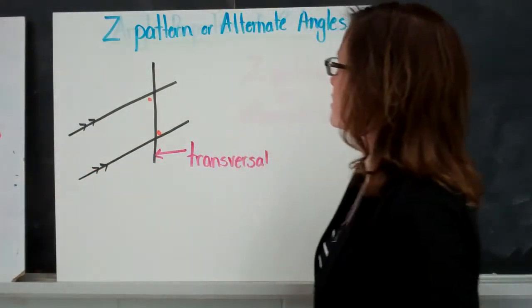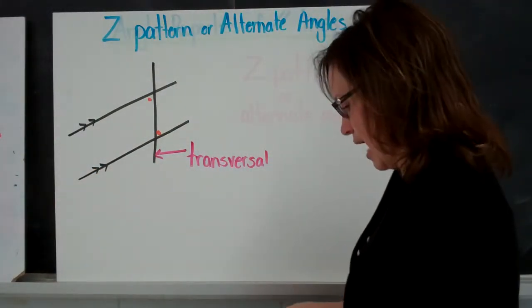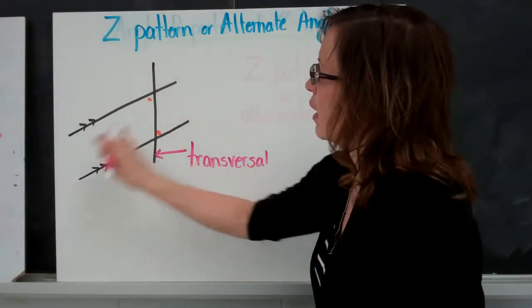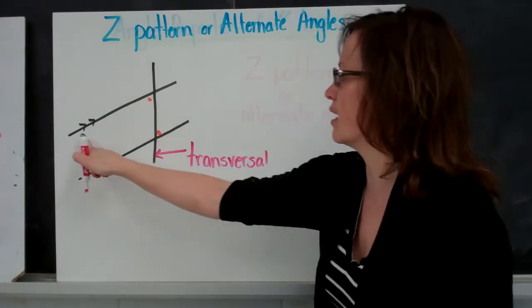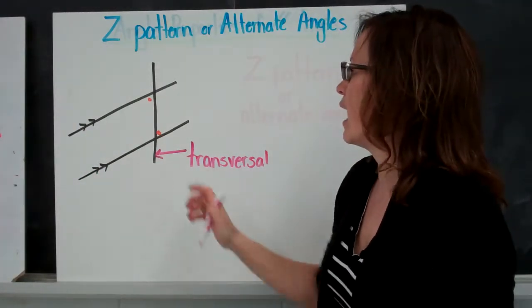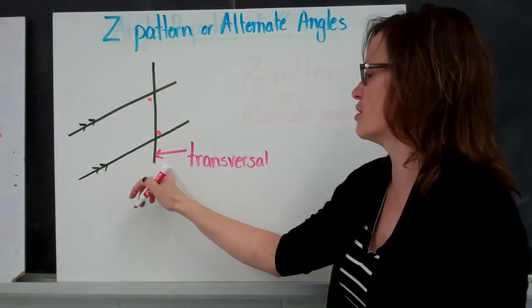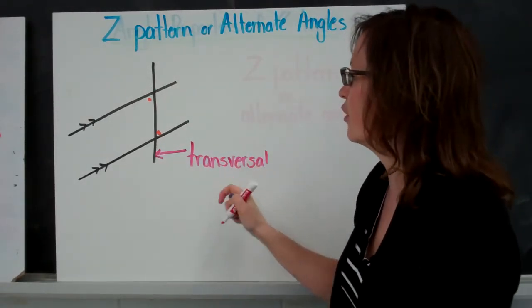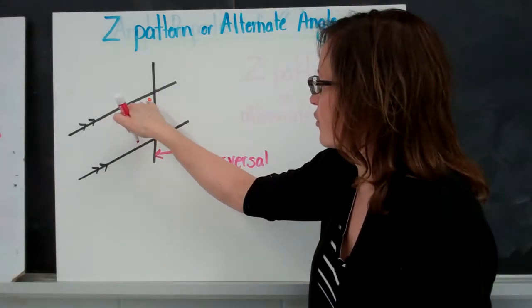So first, let's talk about the Z pattern, or alternate angles rule. If we have two parallel lines, and we know they're parallel because they're marked, right? And then we have a line that intersects them. This line that goes through both is called a transversal. Interesting detail to know.